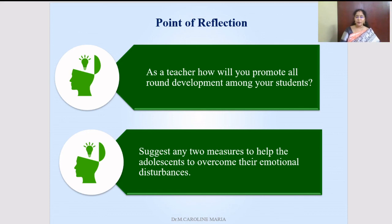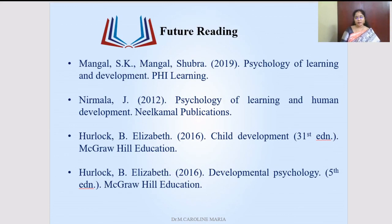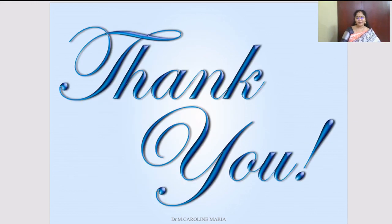Key learnings: each life stage of a human being is very important — you cannot negate any stage. Parents and teachers should help each child to overcome all the developmental tasks. Reflection questions: As a teacher, how will you promote all-round development among your students? What are the various activities you plan in your class? Suggest any two measures to help adolescents overcome their emotional disturbances, given their mood swings from peak excitement to deep disappointment. Thank you for listening, students. Wish you all good luck.